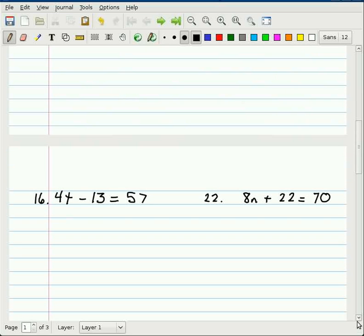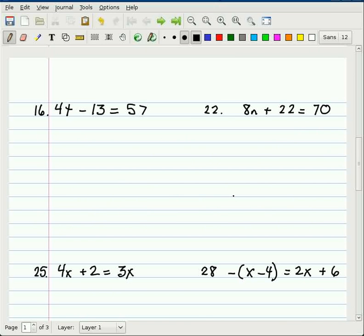Working our way over to some two-step problems on the next page here. For number 16, we have 4t - 13 = 57. Let's start with dealing with the 13. The inverse operation is plus 13. We do it to both sides. When we do that, the 13's cancel. And we end up with 4t left over on this side. And 57 plus 13, that must be 70.